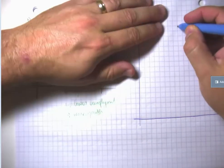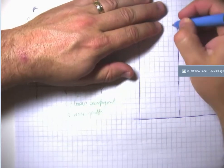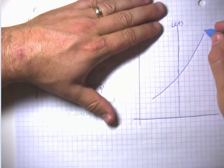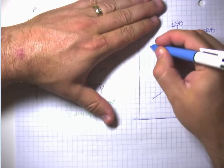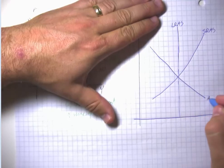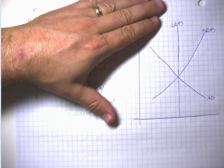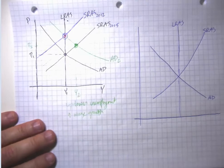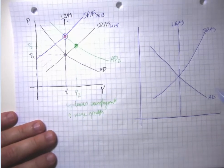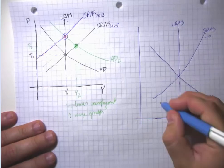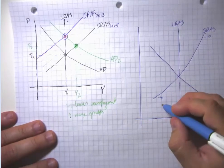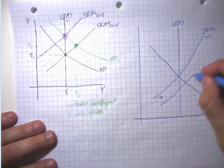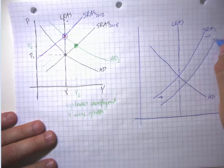Let me do another scenario. Suppose we have a sudden and beneficial drop in the price of some crucial raw material — maybe oil, or maybe fracking has driven down oil prices suddenly in a way no one foresaw. If we have a decrease in raw material prices, then we're going to have an increase in short-run aggregate supply, shifting out to short-run aggregate supply two.